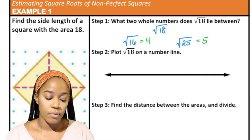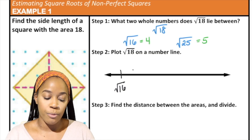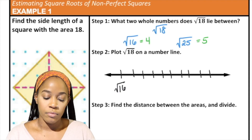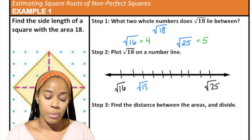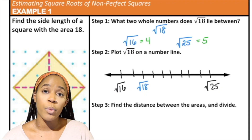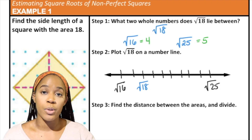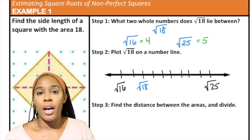Now let's put this on a number line. We know that radical 16 is going to be on the lower end of our number line and we need to get all the way up to radical 25. Radical 18 would be right about here, because it's two units up from radical 16. On our number line it looks like it's going to be a lot closer to the square root of 16, or a lot closer to 4, when we actually take the square root of 18.